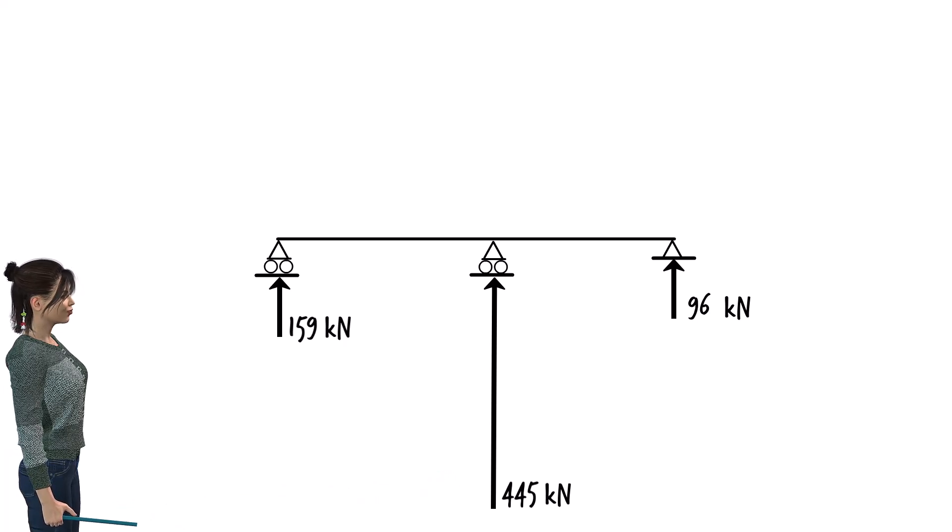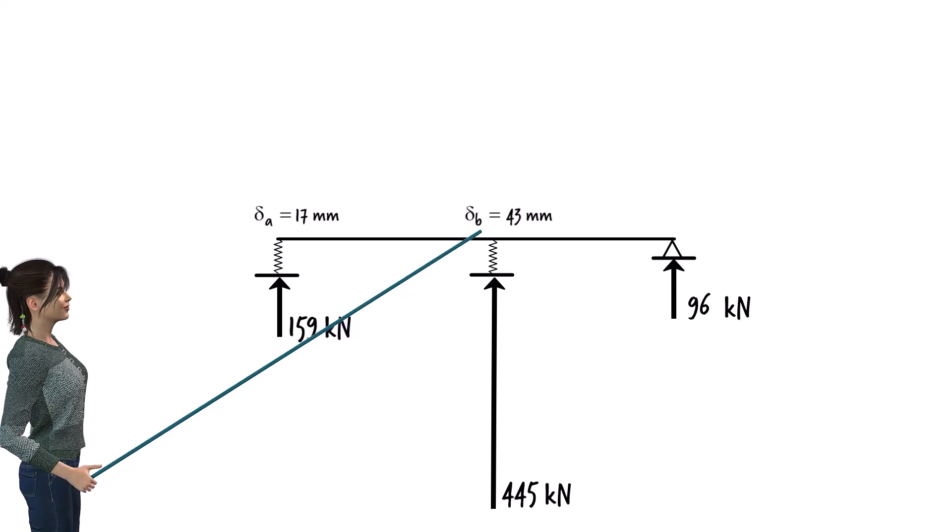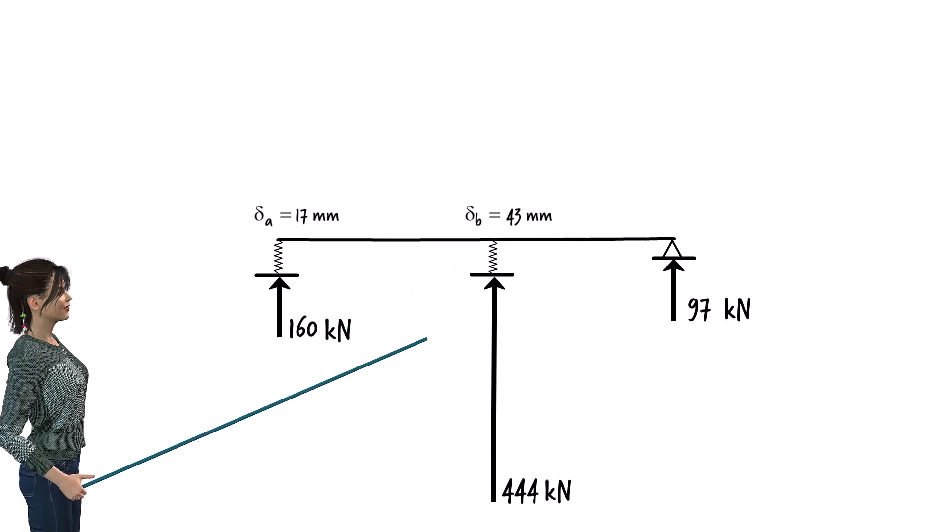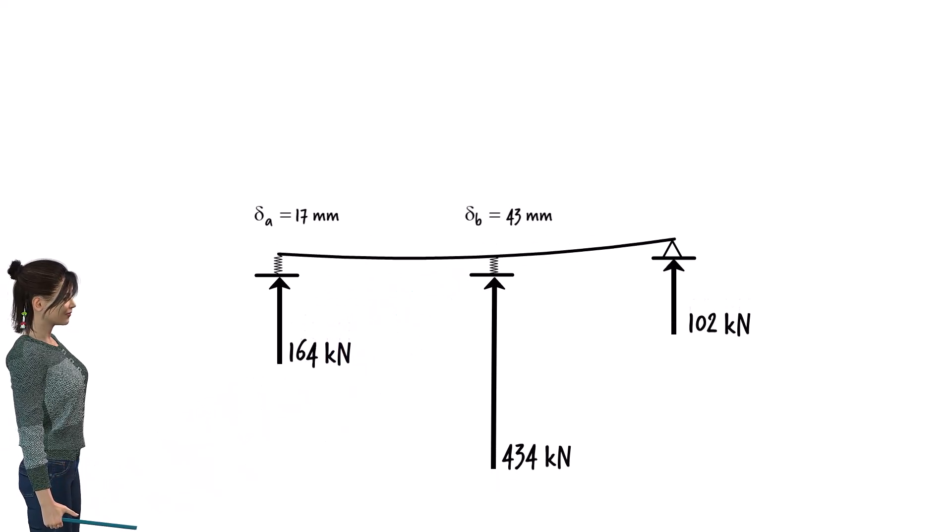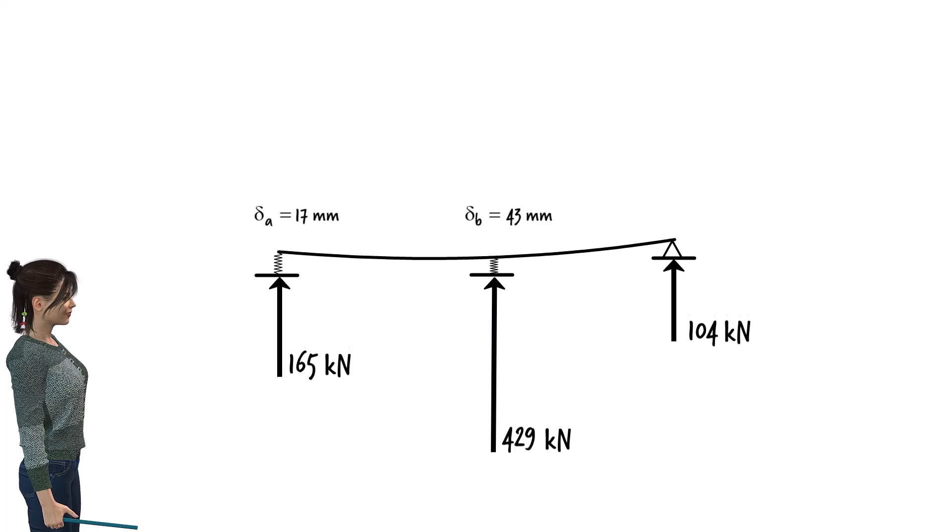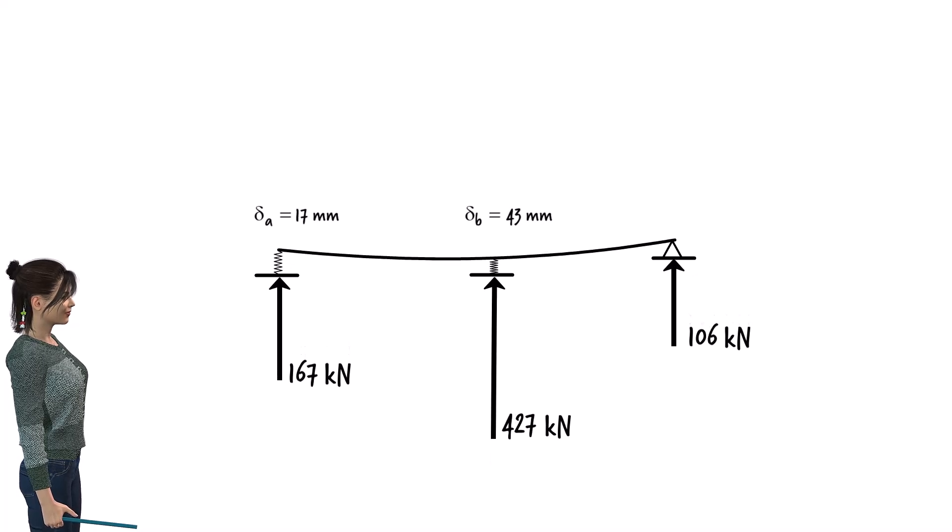When the roller supports are replaced with elastomeric bearings, the middle support experiences significant settlement. This results in a decrease in the reaction force at the middle support, and, consequently, an increase in the reaction forces at the ends of the beam.